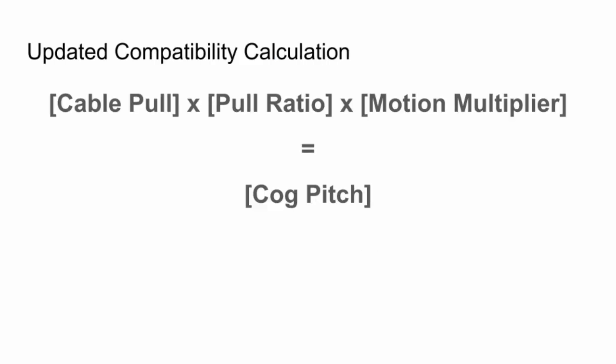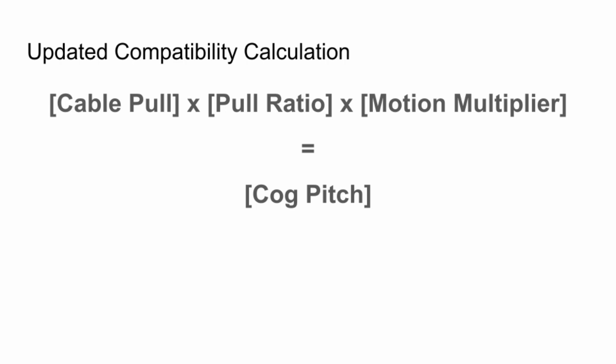So how do we determine compatibility now? I propose updating our calculation to include a multiplier. The components are likely to be compatible as long as the average cable pull times the average pull ratio times the motion multiplier is about equal to the cog pitch. Of course, this equation is still an approximation, so some combinations may fit the equation and still not work properly — use at your own risk. I've come up with some ranges for the motion multiplier based on my data. A conservative estimate would place it at 1.02 ± 0.02, and a broader estimate would increase that range to ± 0.04.